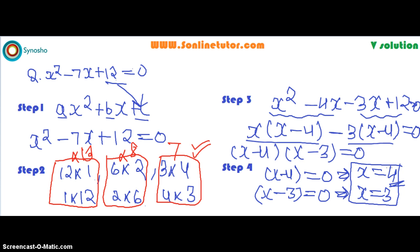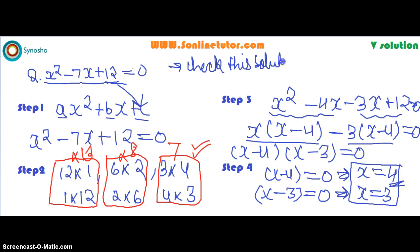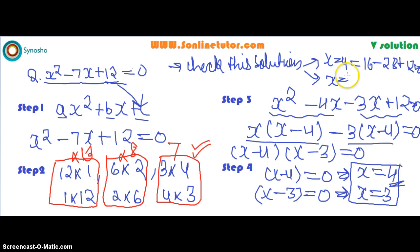How can you find out that both solutions are correct? To verify, substitute these values back into the equation. If you substitute x equals 4: 16 minus 28 plus 12 equals 0. Correct. If you substitute x equals 3: 9 minus 21 plus 12 equals 0. Correct again. This means that both factors satisfy the equation, confirming the exact solutions.